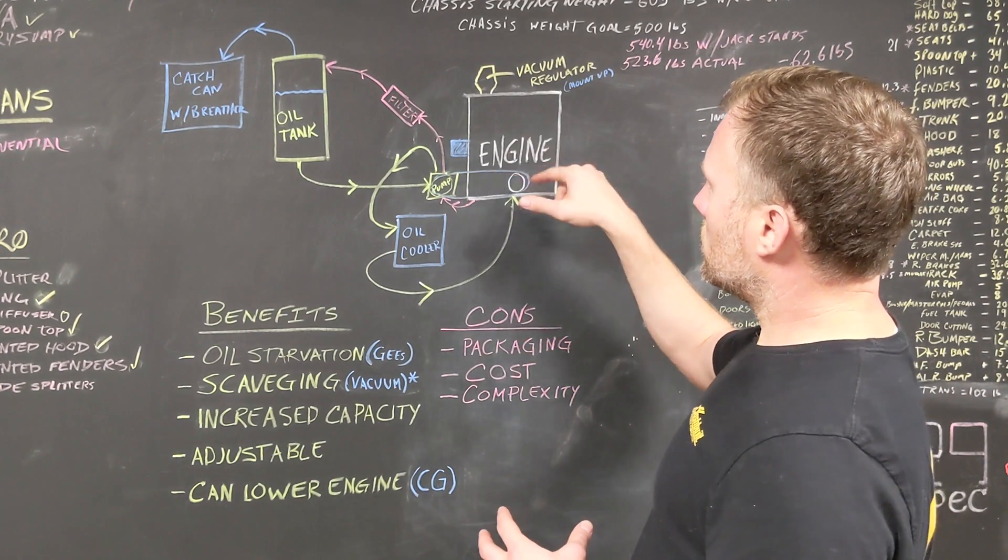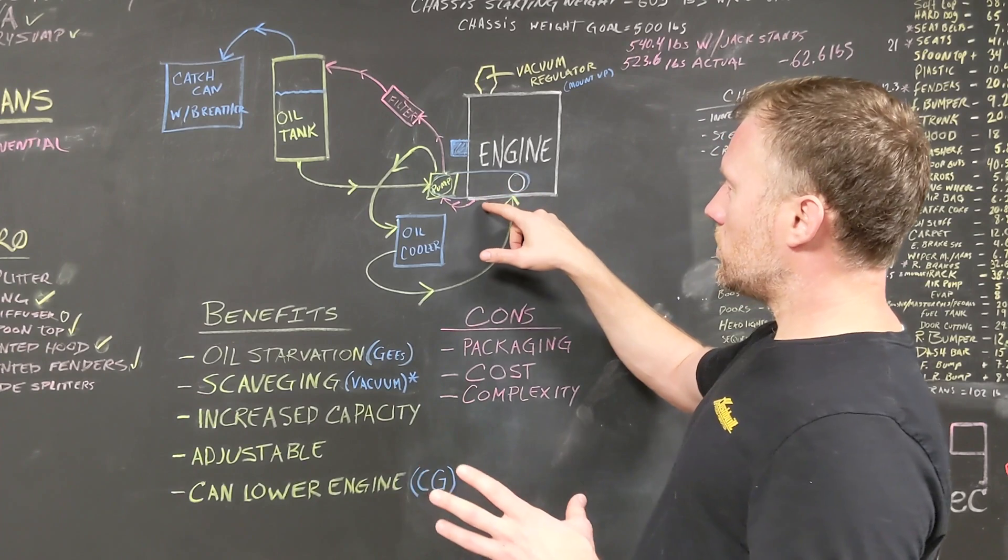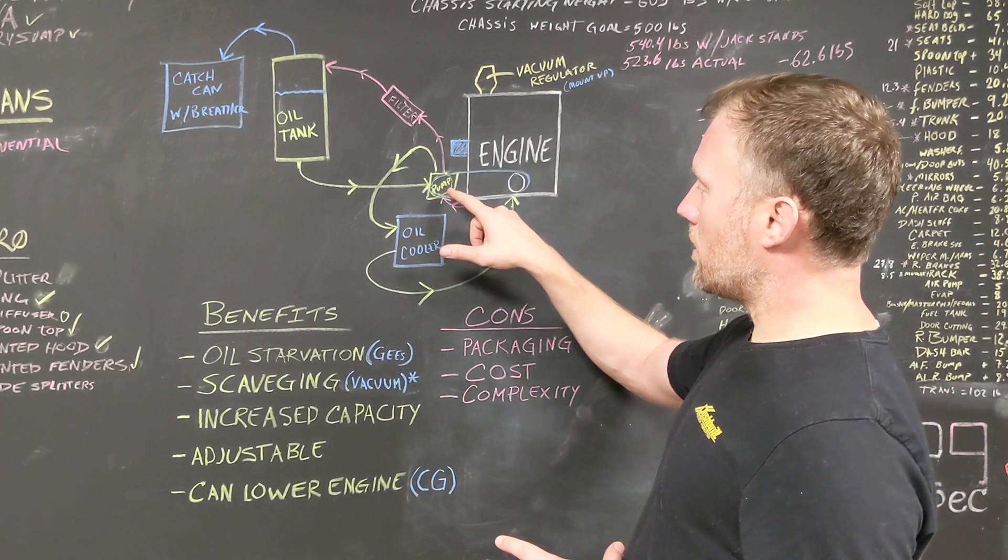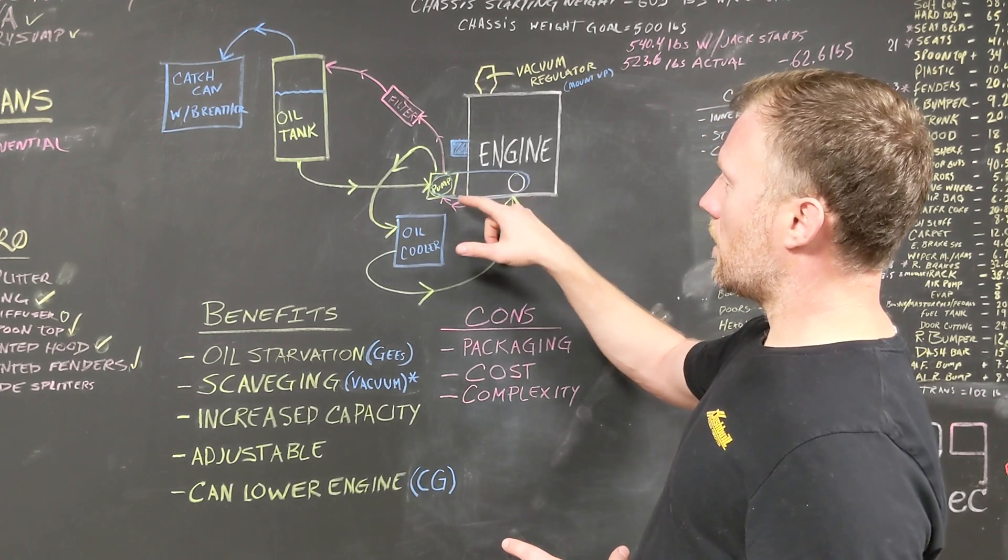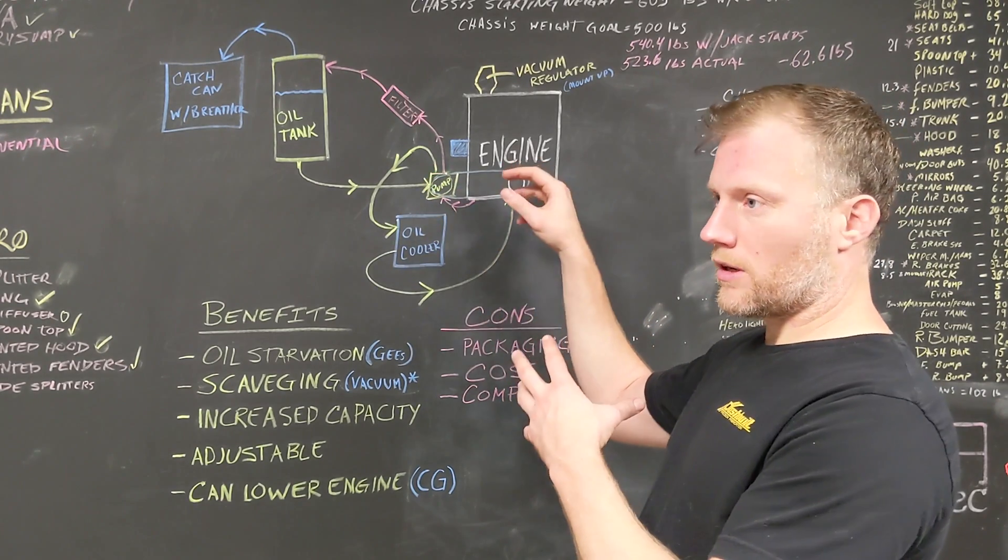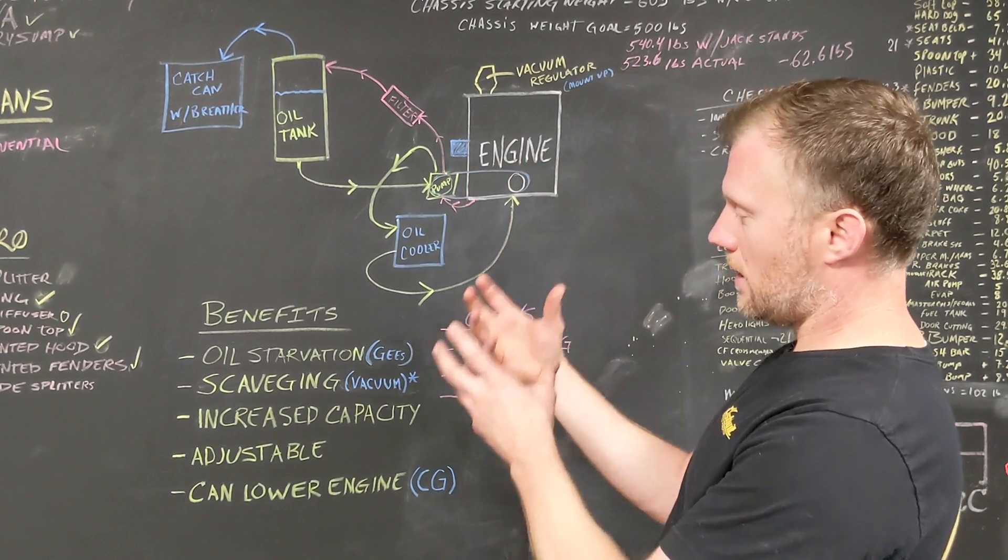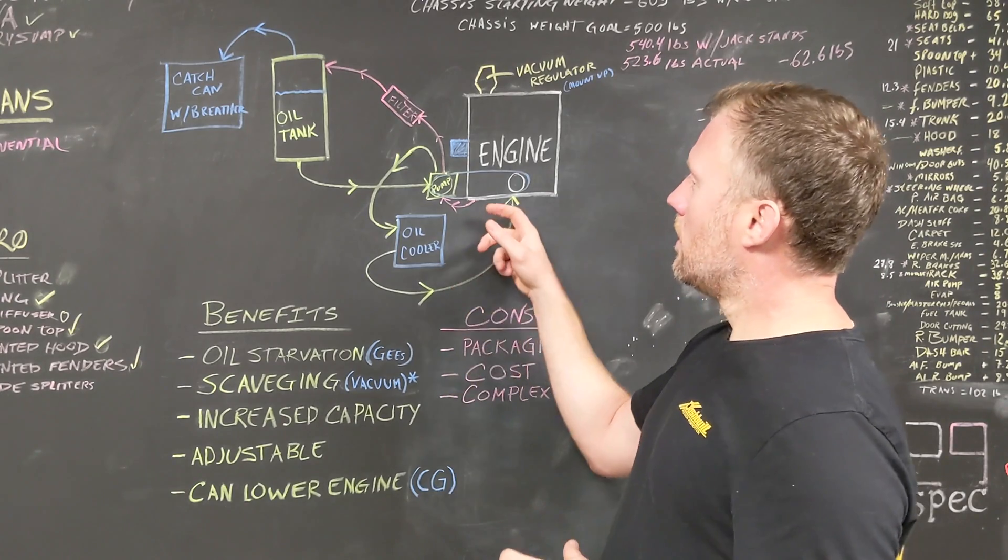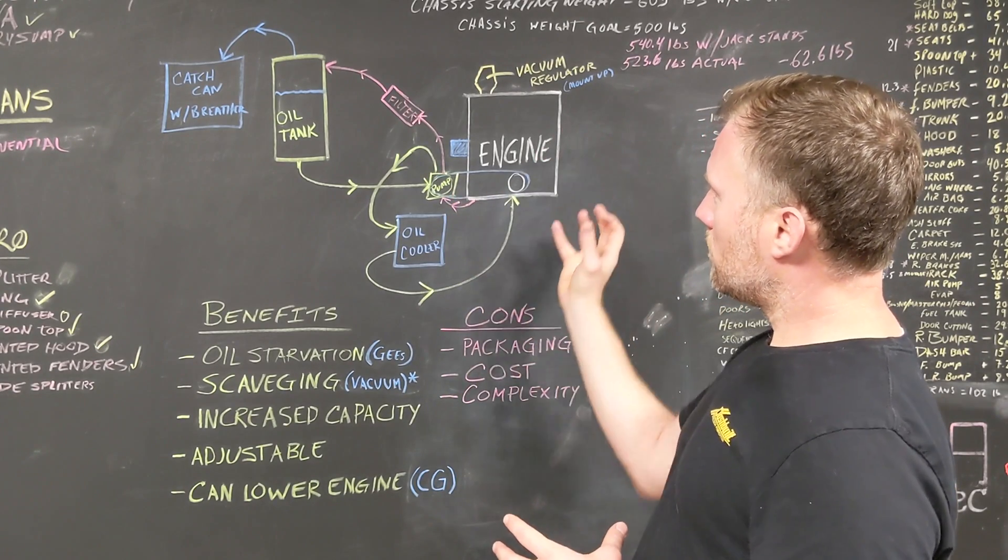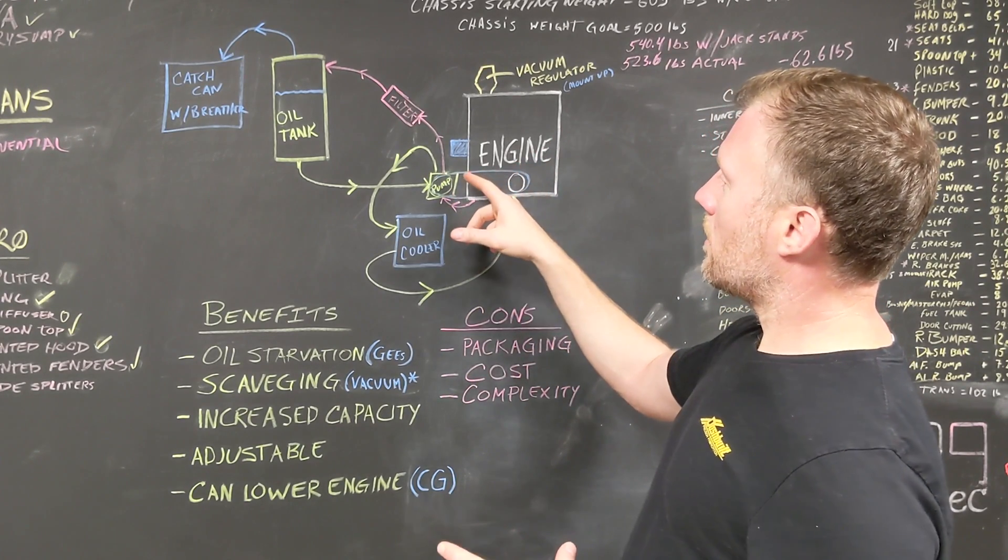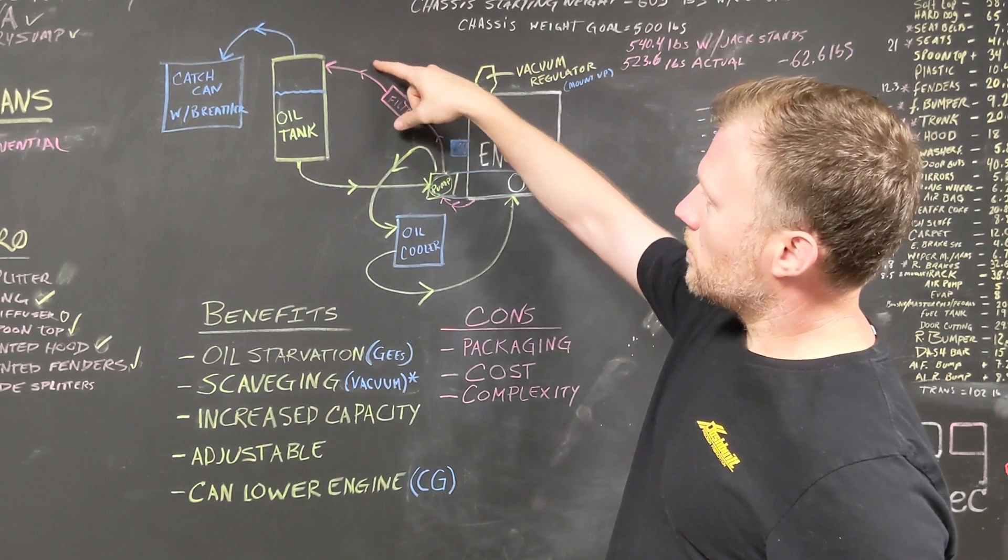So once it goes into the engine, it does its thing. It lubricates the engine and then gets sucked out by the pump. And this is actually done through galleyways. But depending on what system you have, it can be a line or lines or it can be just the galleyways within the pan itself. So anyway, it gets sucked out of the engine, it pulls that vacuum we were talking about, and then it gets pushed back to the oil tank.